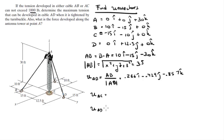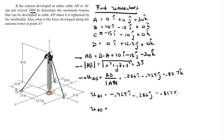In the same manner, find unit vectors AC and AD by repeating the steps with C and D substituted for B. Unit vector AC comes out to (−0.429i − 0.286j − 0.857k), and unit vector AD comes out to (0i + 0.385j − 0.923k).